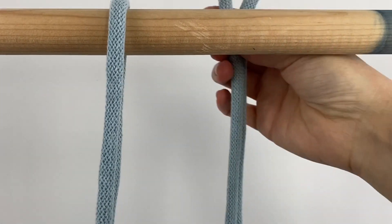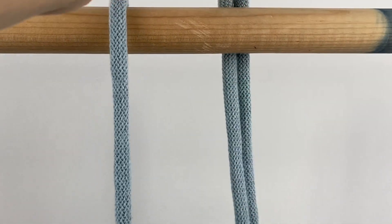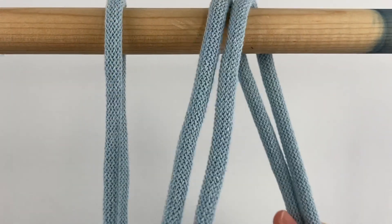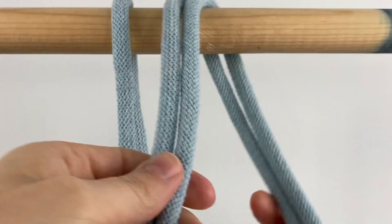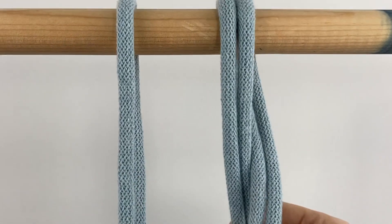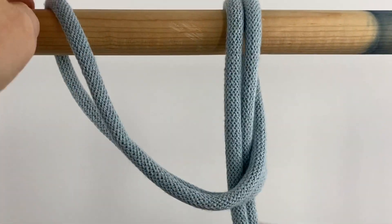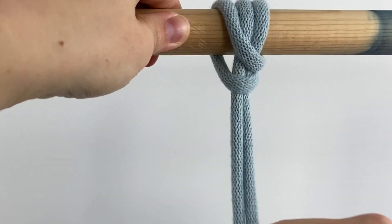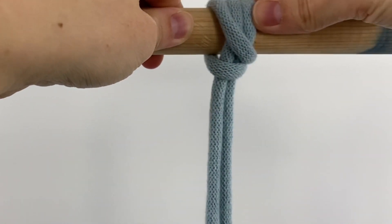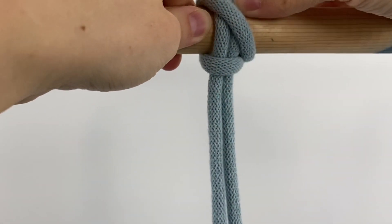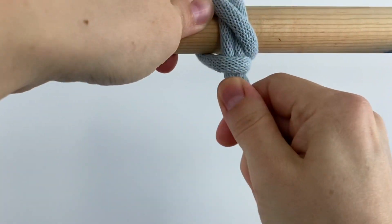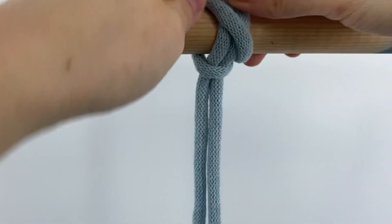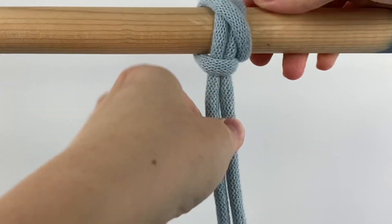You're going to pull them up over the dowel, and then this loop that is formed here, you're going to pull them down through this and then just tighten it up. And you have to kind of adjust it a little, but then this makes a nice reinforced larks head knot.